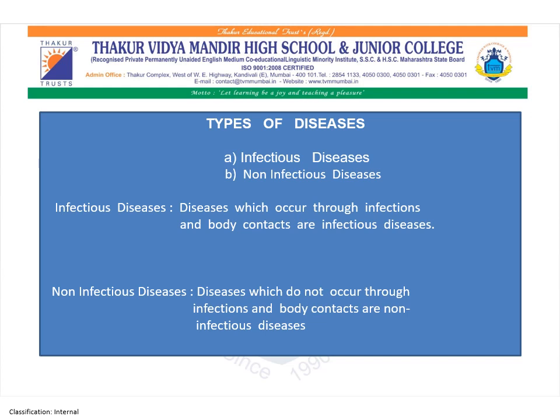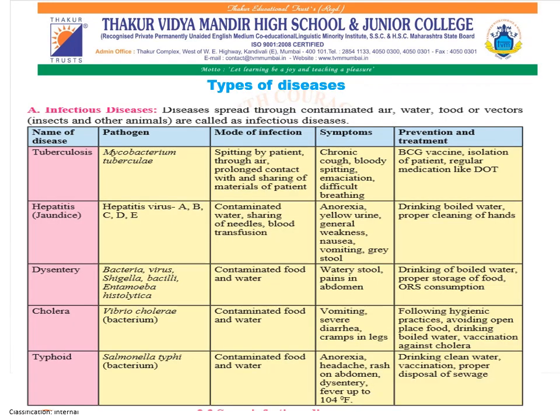Now, elaborately, we are going to understand about infectious diseases. Diseases which occur through infections and body contacts are infectious diseases. Diseases which do not occur through infections and body contacts are non-infectious diseases. Now, to get a clear idea of infectious diseases — the pathogen, the mode of infection, symptoms, and prevention and treatment — let us go through this chart.